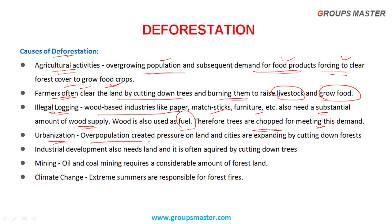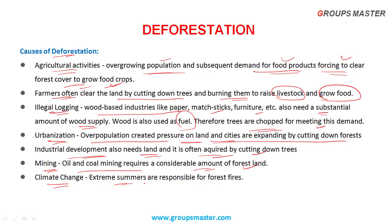Urbanization: Over-population creates pressure on land, and cities are expanding by cutting down trees. Mining: Mining activity is also one of the causes - oil and coal mining requires considerable amounts of forest land. Climate change: Extreme summer temperatures are responsible for forest fires, which cause large-scale destruction of trees.